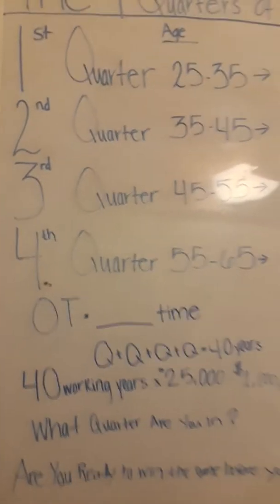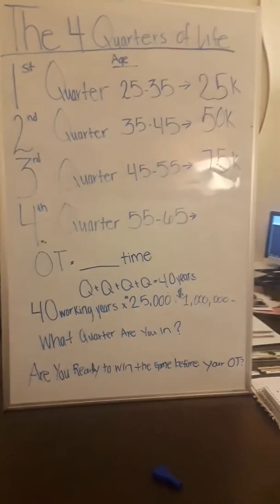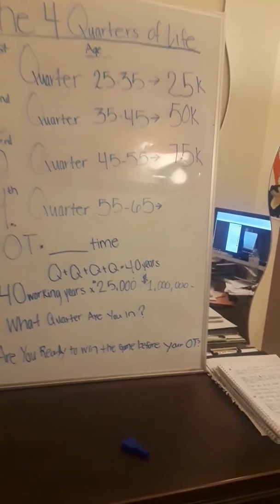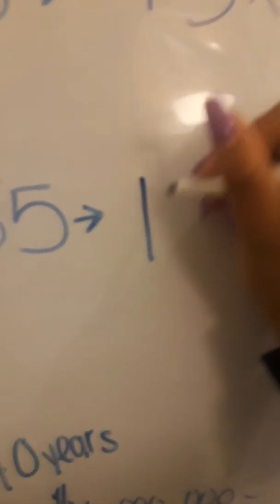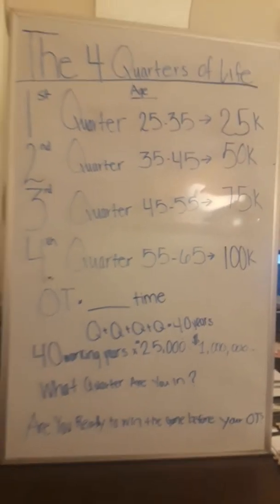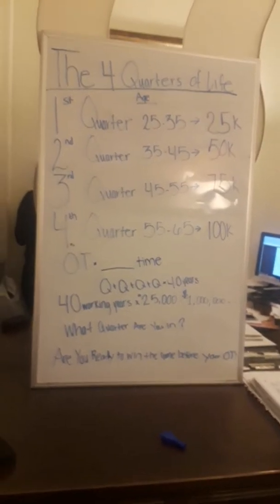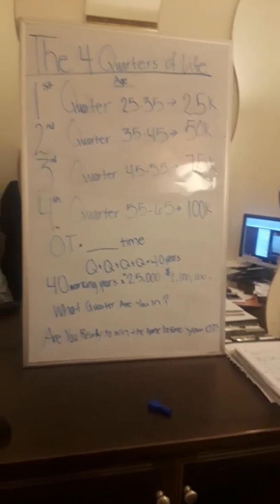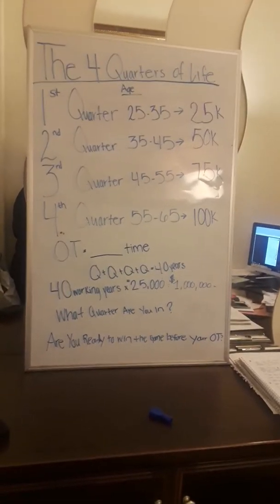Third quarter, the ages of 45 to 55, you should be at $75,000. You should be at $75,000.